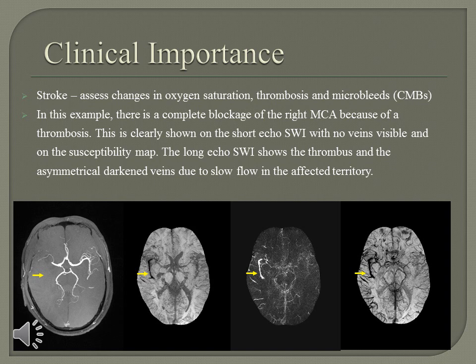Our new fully flow compensated sequence can also be used to assess changes in oxygen saturation, thrombosis, and microbleeds. In this example, there is a complete blockage of the right MCA due to thrombosis. This is clearly shown on the short echo SWI images with no veins visible and on the susceptibility map. The long-echo SWI image shows strokes and asymmetrical dark veins due to slow flow in the affected territory.